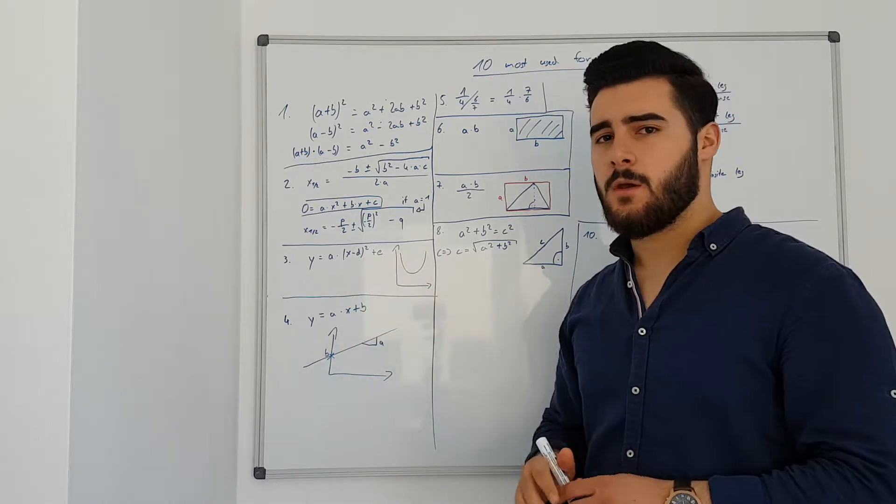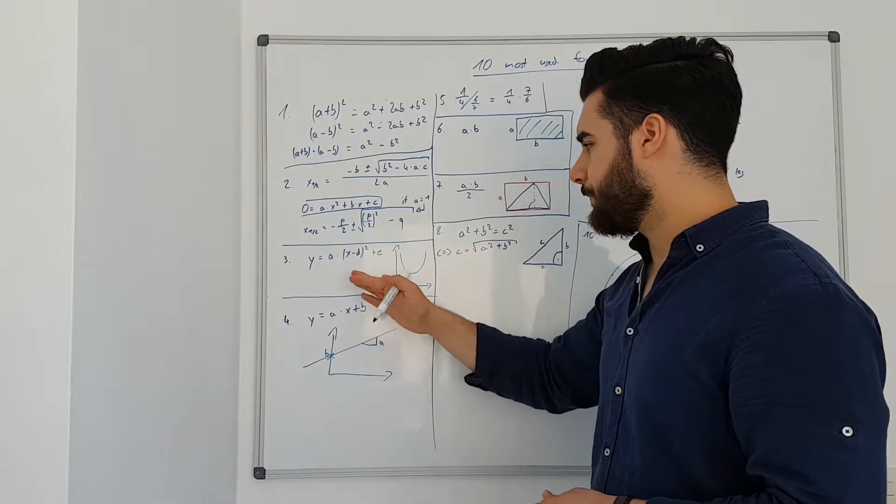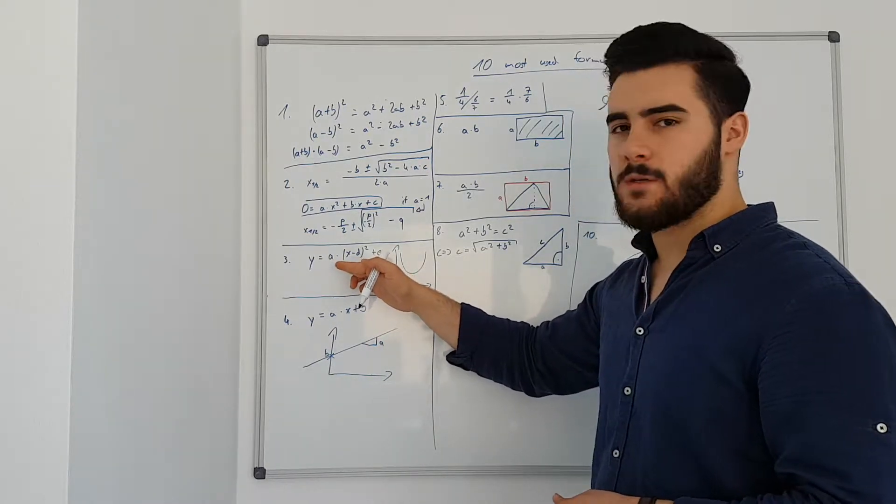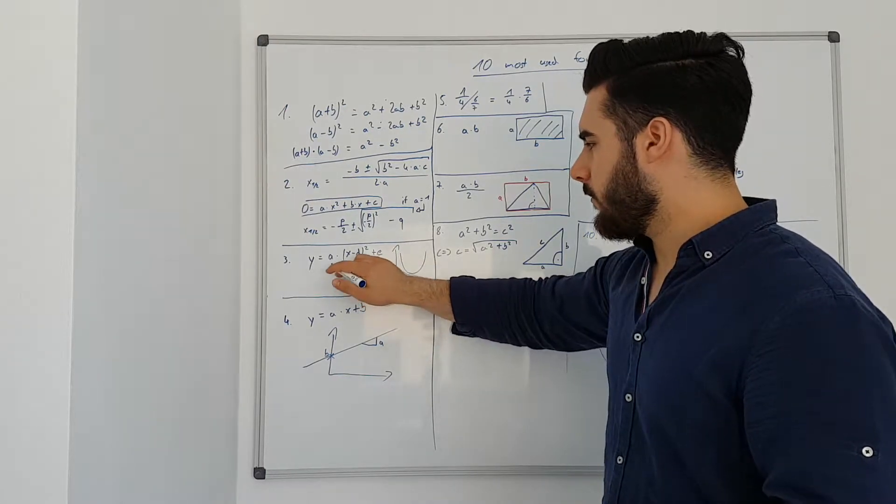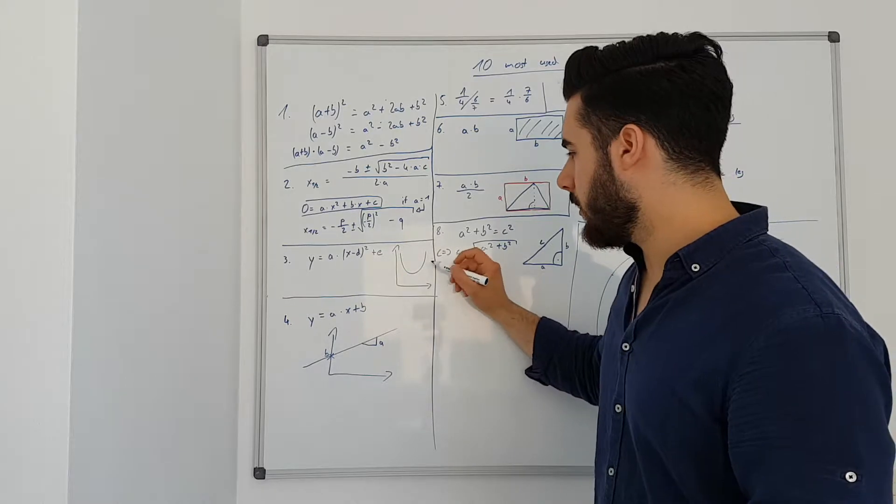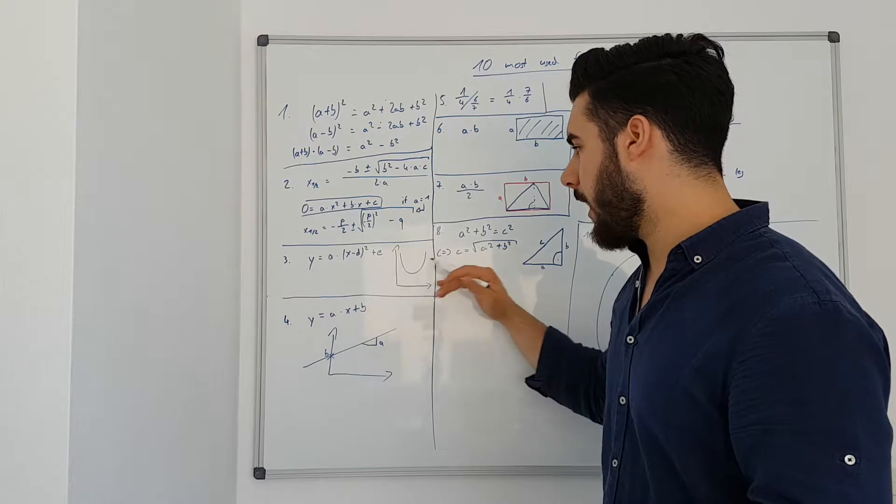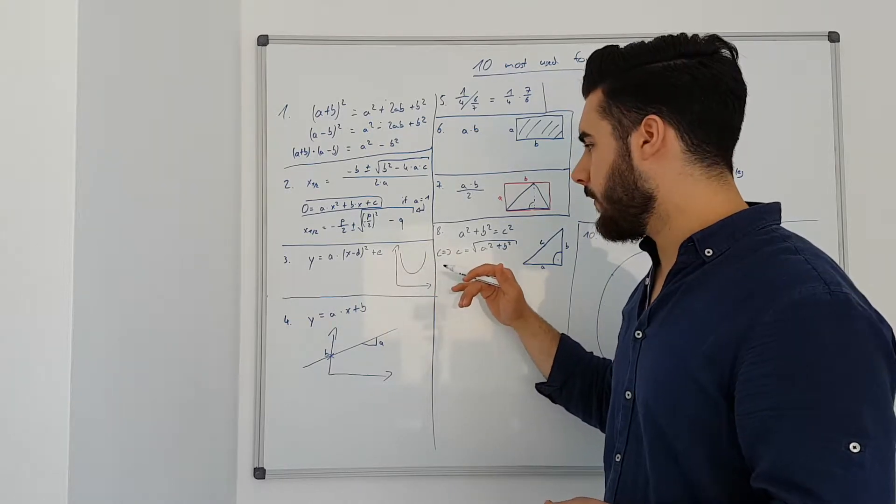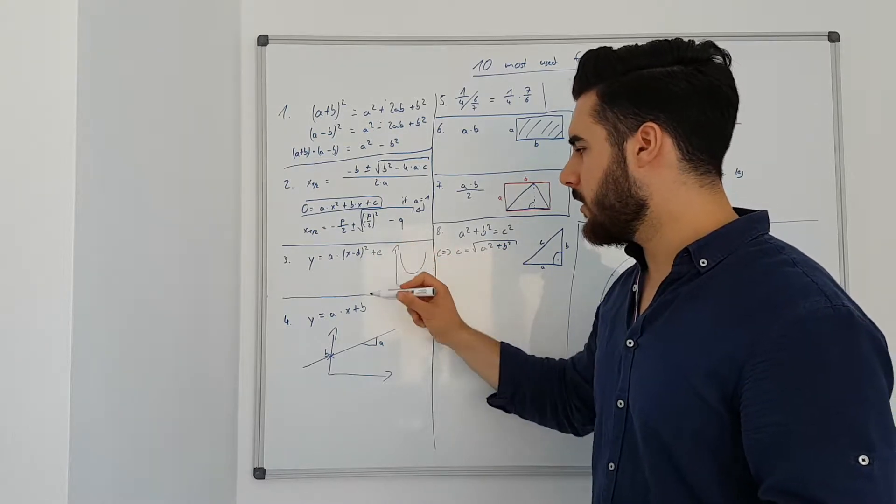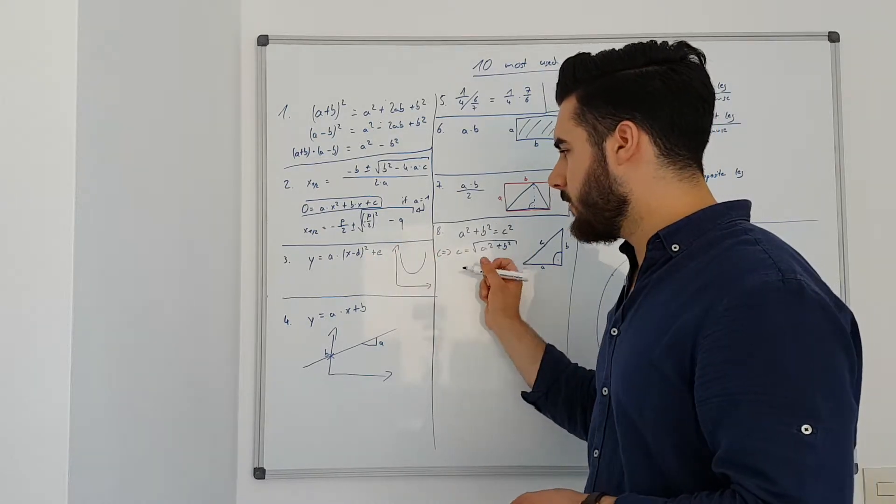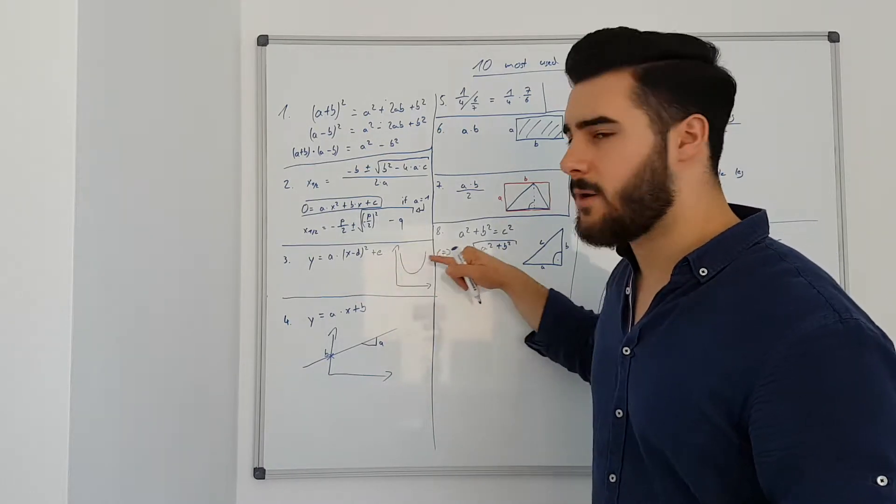The third one, we are going to talk about the parabola or the formula for parabola. In this basic form the parabola formula shows you best because a shows you the slope of the parabola, D shows where on the x-axis the parabola is. So depending on how large D is, it might be either more to the left or to the right. And E shows you where it starts on the y-axis.